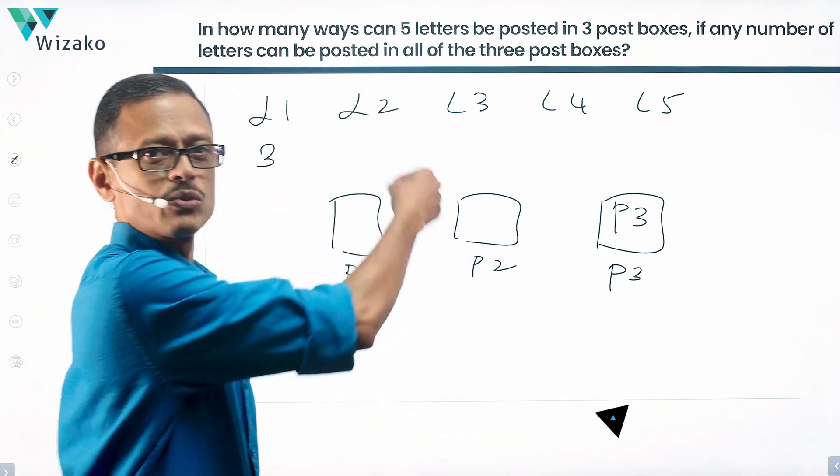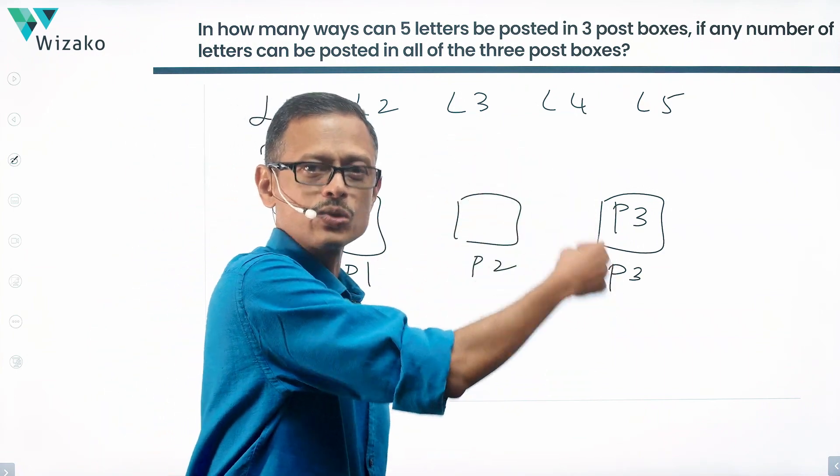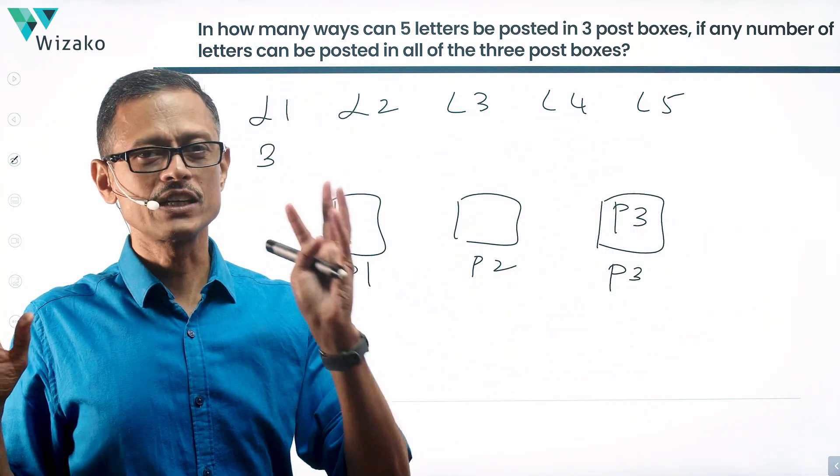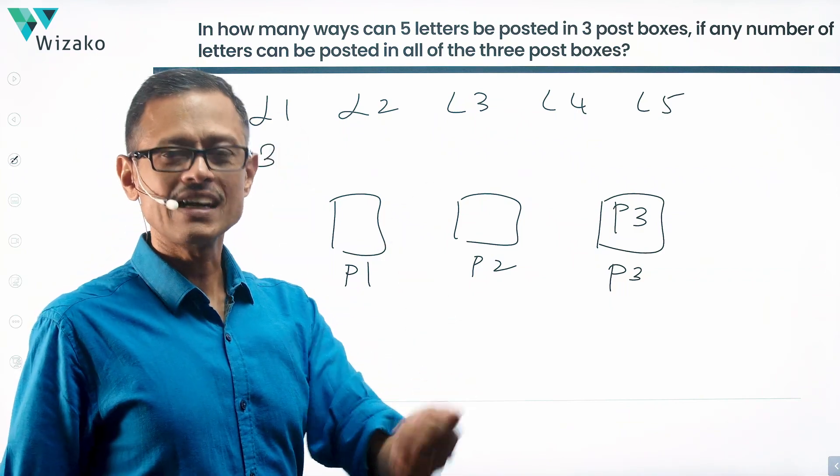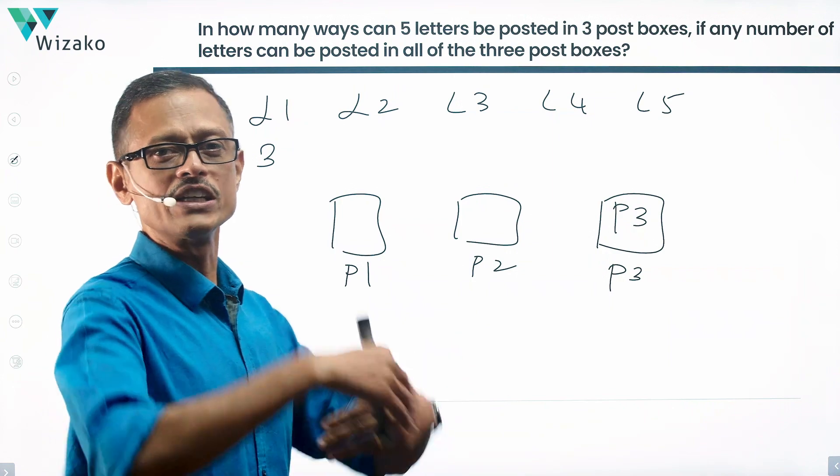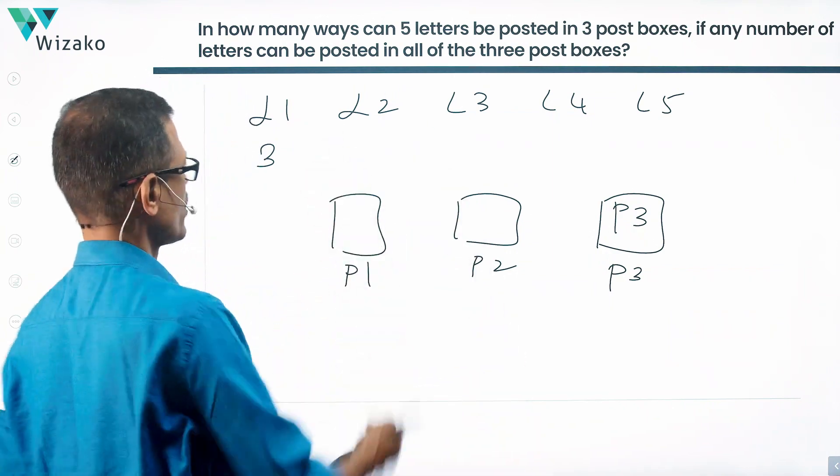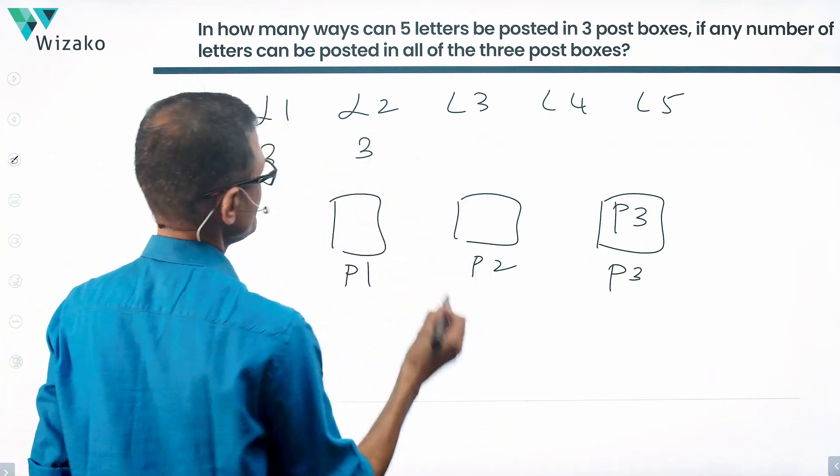So I'm picking the second one, it could still go into one or two or three, even if the first letter went into one. So first letter can be posted in three ways. When I take the second letter and try to post it, I still have three ways. I need not go to a different box at all. I can post it in the same box. So second letter also has got three ways.